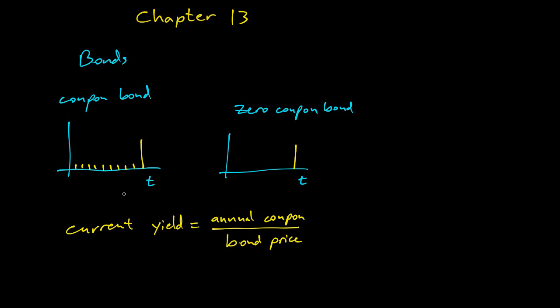So if you have two different coupon bonds, you can figure out based on their price and how much interest they're paying, one might have 5% current yield, another one might have 6% current yield. So you can get a sense of how valuable they are.